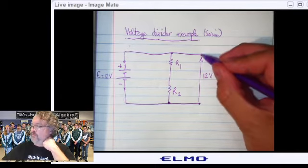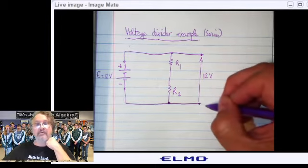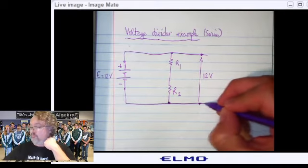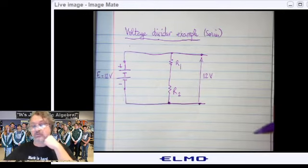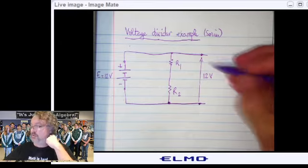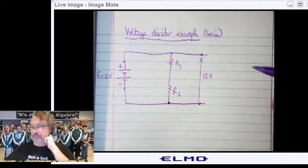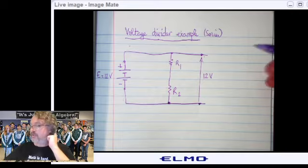So whatever part of the circuit that requires 12V is going to be found right here. So you take that part of the circuit, you connect it right here, you have your 12V. But how about the 5V?